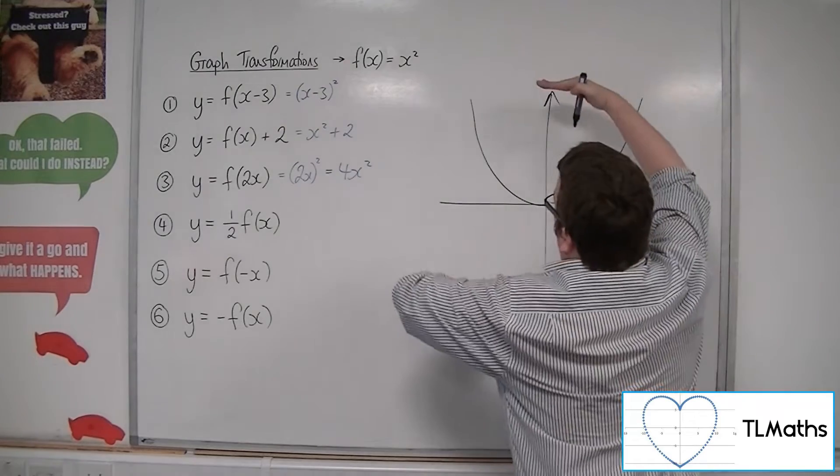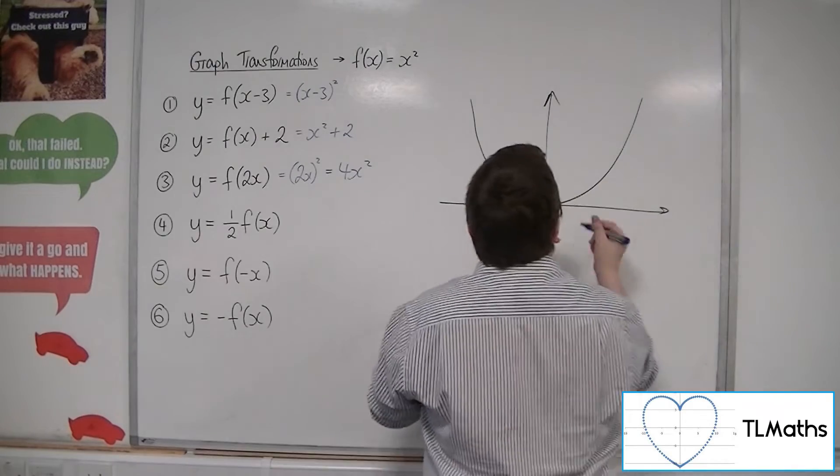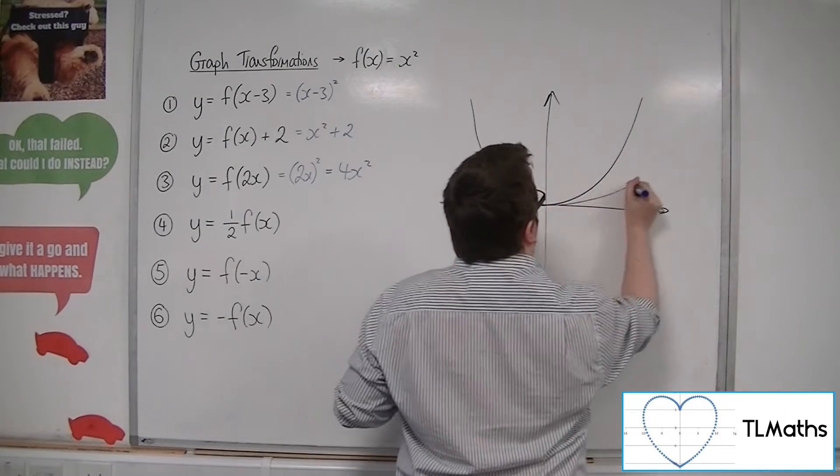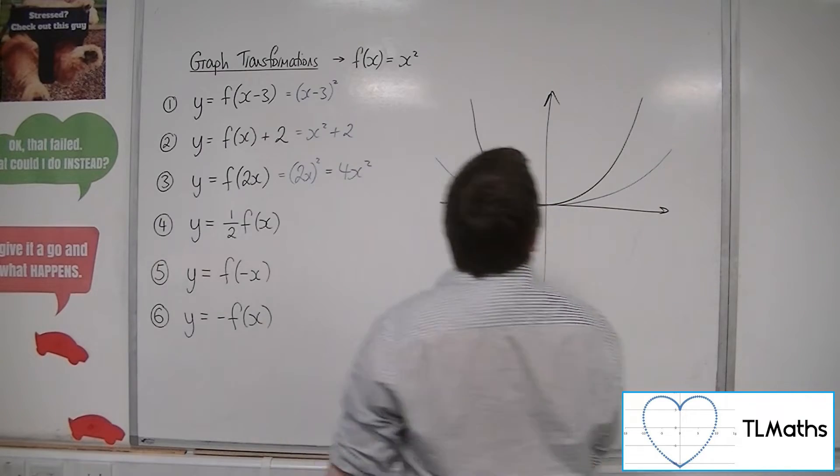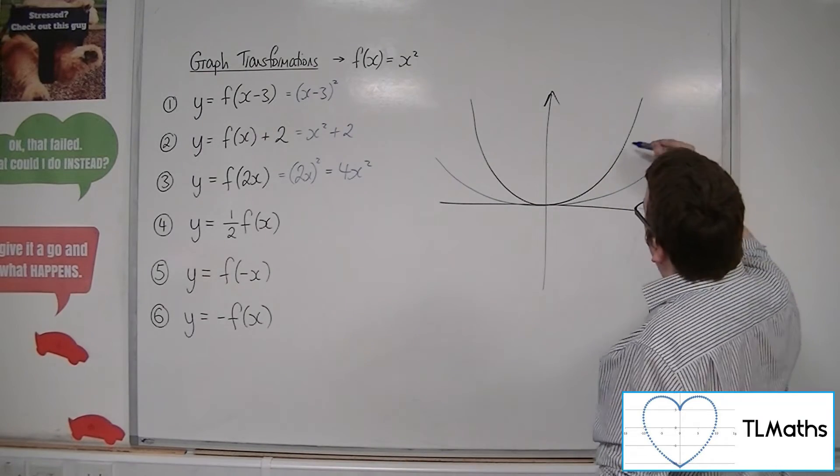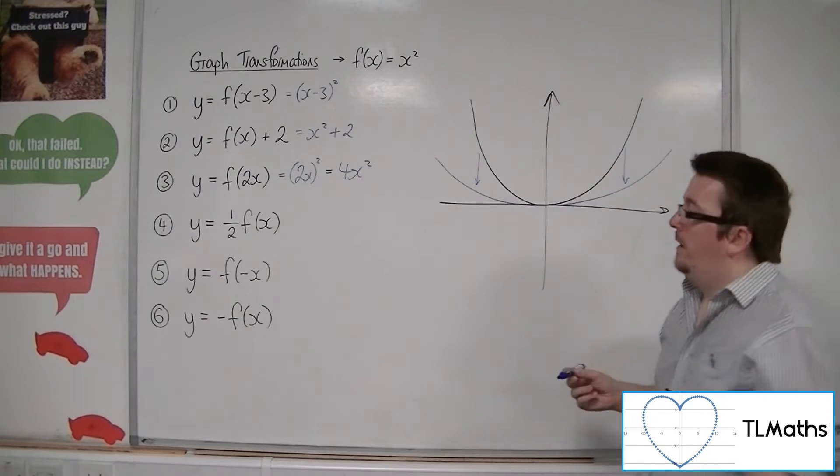In other words, it's stretched down that way, so it's compressing the graph. So the new graph will look something like this, where every single point on y equals x squared, its y-coordinate has been halved.